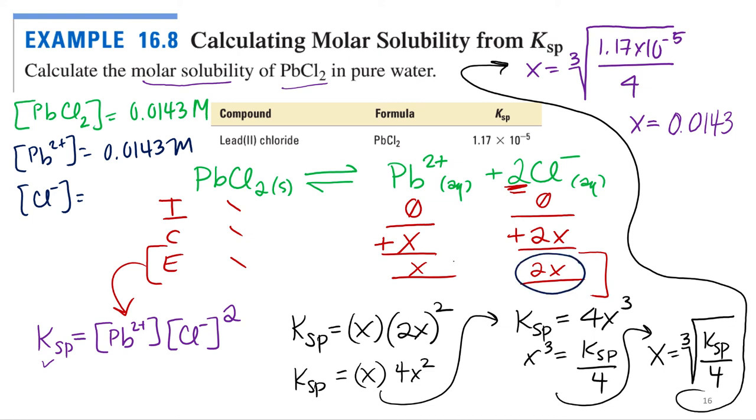What about chloride? Double. Double that, right? Because it's 2x. It's here, staring us in the face. Lead is x, so it's just the same. Chloride is 2x because it's a 2 to 1 ratio. So 0.0286. Alright, but when you're referring to the molar solubility, it's the whole compound, which is always going to be x.